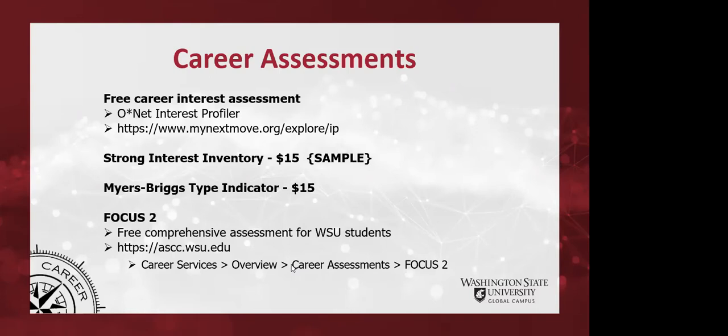The Strong Interest Inventory is available to Global Campus students for $15, as is the Myers-Briggs for $15 each. If a student needs career exploration to figure out what's a good option based on interests and skills, I'd recommend the Strong Interest Inventory. If they already know what they want and are trying to figure out how their personality, values, and communication style fit within different industries, the Myers-Briggs is probably a better assessment.